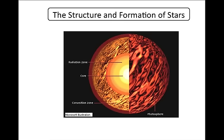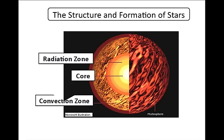The structure and formation of stars. First you have the core, then you have the radiation zone, followed by the convection zone, and then the photosphere.